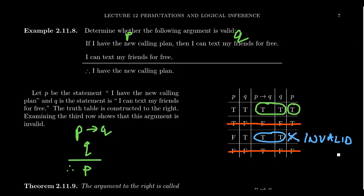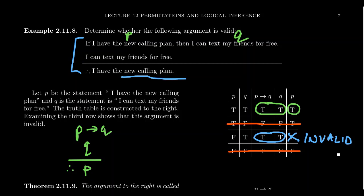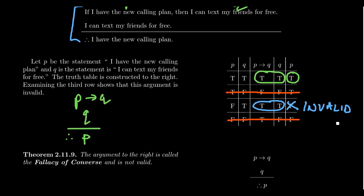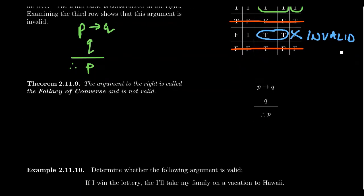When you look at the argument itself, you can perhaps see it. If you have the new plan, then you can text for free. You can text for free. Therefore, you have the new plan. No — there could be other reasons you could text for free. Perhaps there are old plans that also let you text for free. Just because the new plan gives you free texting doesn't mean no other plan gives you free texting. There could be another explanation. This argument, which is clearly invalid, is an example of what we call the fallacy of converse.